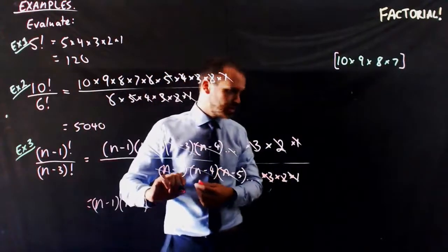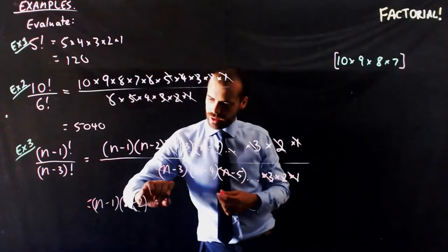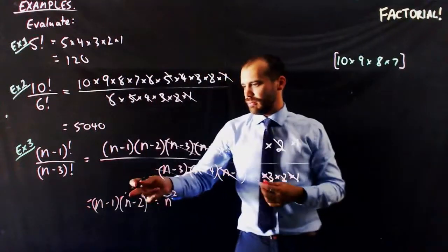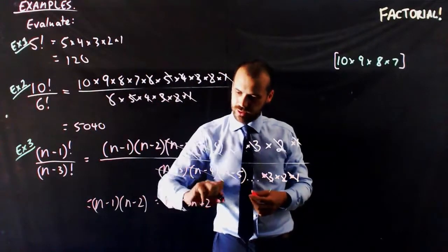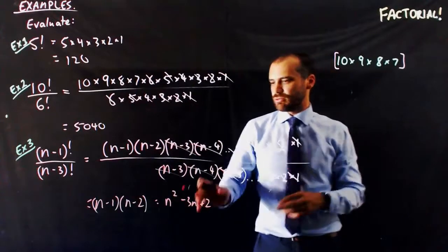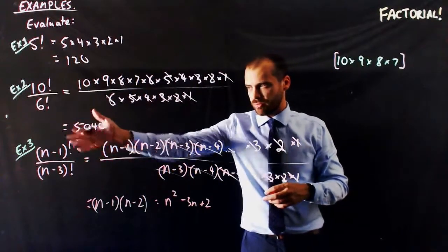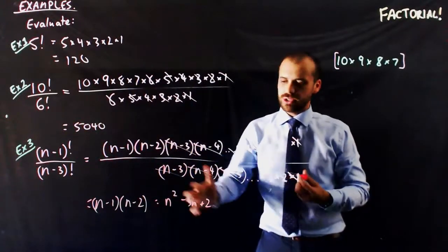I could also write it as n squared minus 1n minus 2, and so minus 3n plus 2. That would be another way to write that n minus 1 factorial over n minus 3 factorial is n squared minus 3n plus 2.